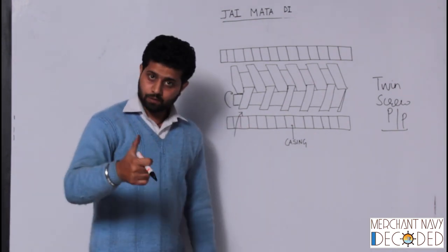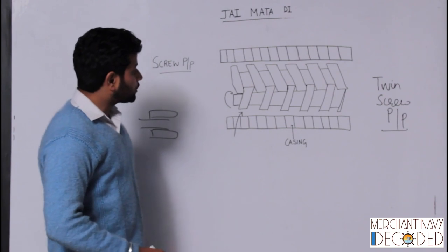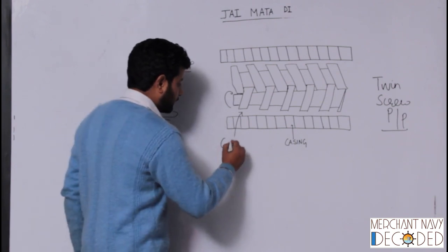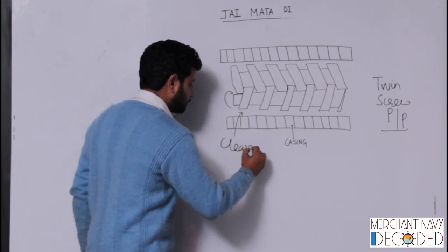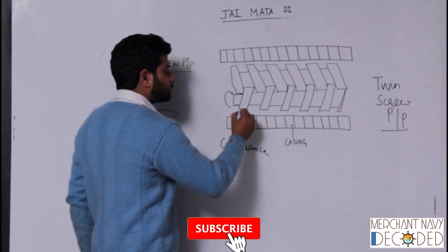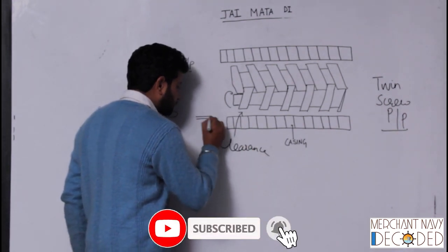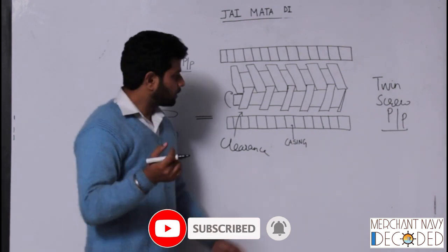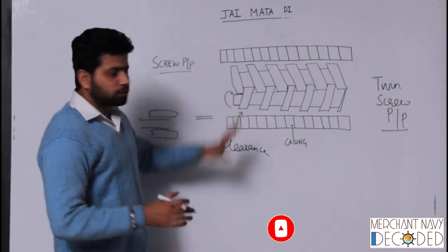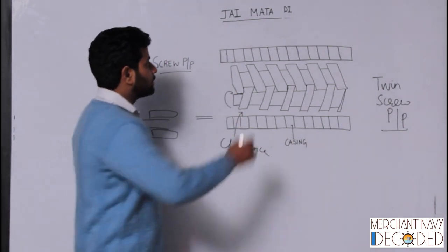Now let's talk about a twin screw. First of all, here this is a clearance between the screws and the casing. This needs to be very less, very less, in millimeters. For the diagram sake we have shown it like this.